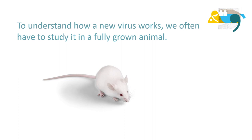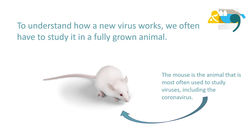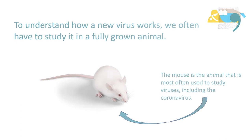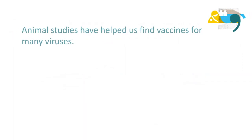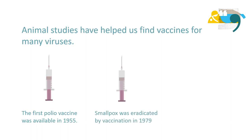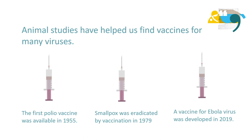To understand how a new virus works, we often have to study it in a fully grown animal. The mouse is the animal most often used to study viruses, including the coronavirus. Animal studies have helped us find vaccines for many viruses. The first polio vaccine was available in 1955, smallpox was eradicated by vaccination in 1979, and a vaccine for Ebola virus was developed in 2019.